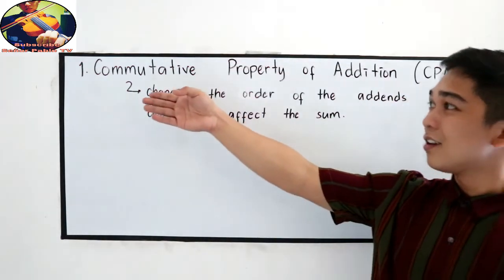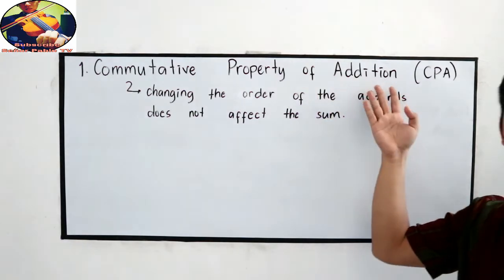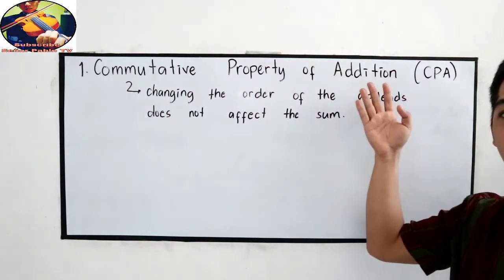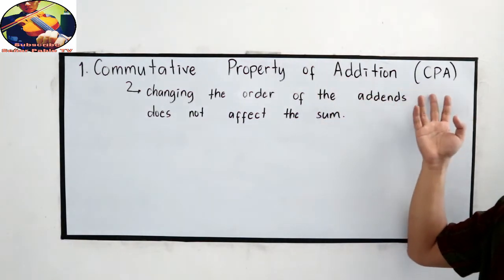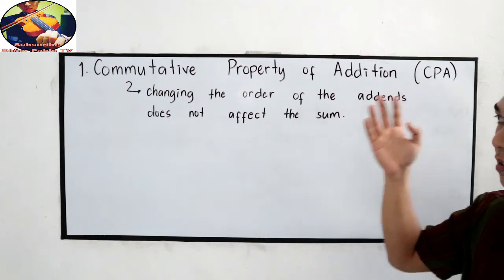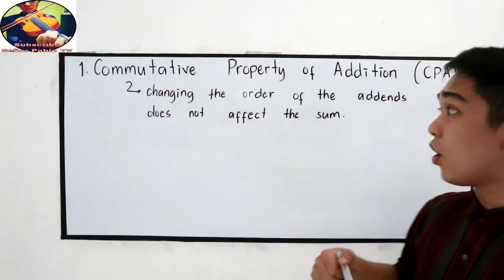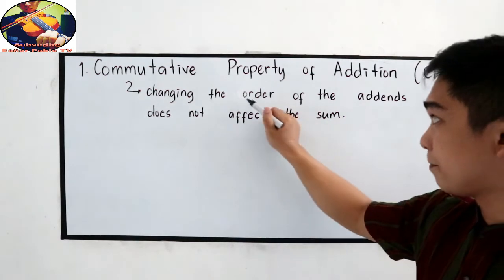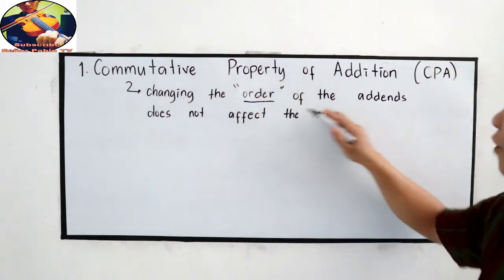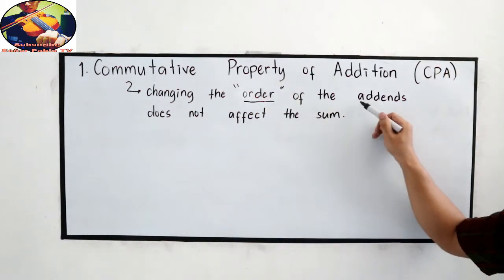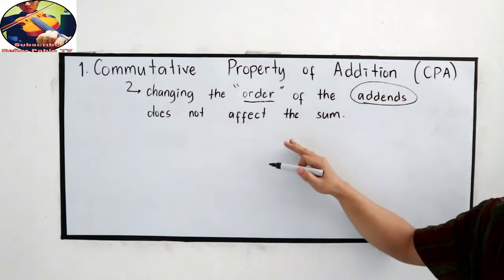First is the commutative property of addition, or what we call the CPA. It means changing the order of the addends does not affect the sum.